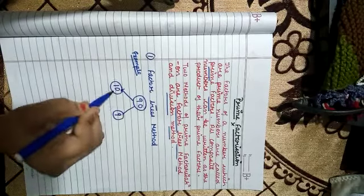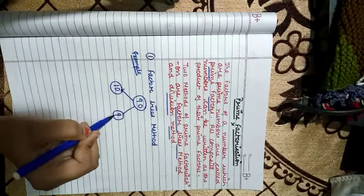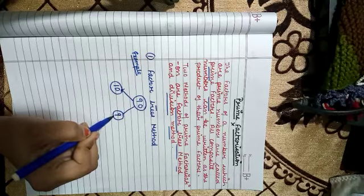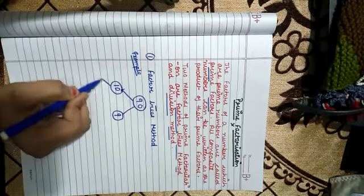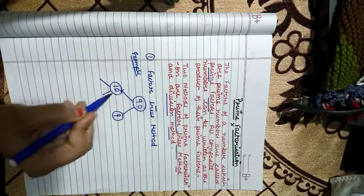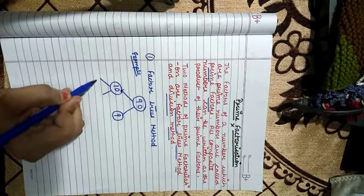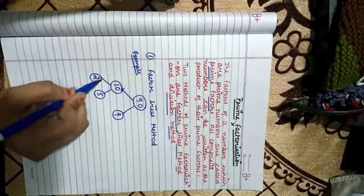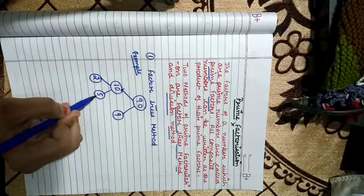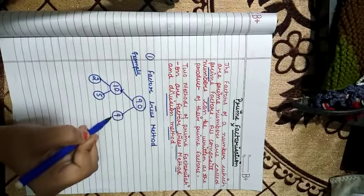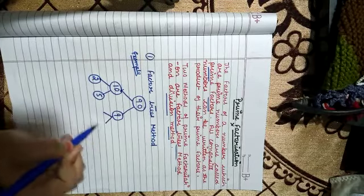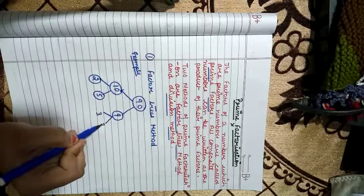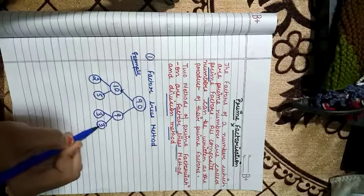But see, 10 and 9 is not prime number. So again further we break 10. So 10 ko kya likh sakte hai? 2 into 5. 2, 5 is 10. 2 and 5 is prime factor. See, again we will break 9: 3 and 3. 3, 3 is 9.